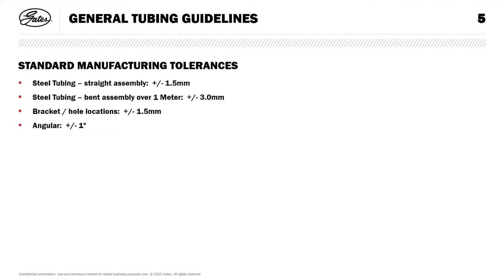These are our standard manufacturing tolerances. On a straight tube we have plus or minus 1.5 millimetres. On a bent assembly over one metre we have plus or minus three millimetres. Brackets and hole locations: 1.5 mm, and angular: one degree.